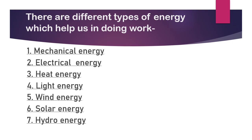Number four: light energy. Light, or luminous energy, helps us to see objects and things around us. The sun, candle, bulb, tube light, and LED are different sources of light energy. Number five: wind energy. We get wind energy from moving air, and wind energy is used for generating electricity.